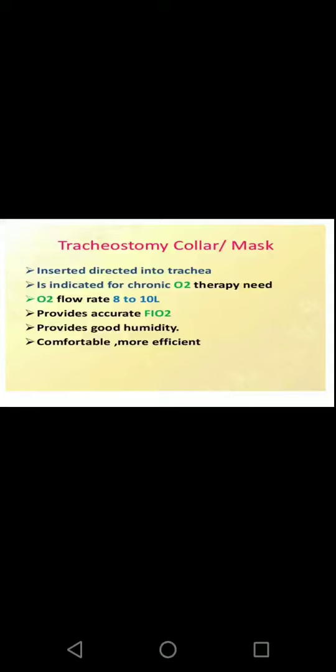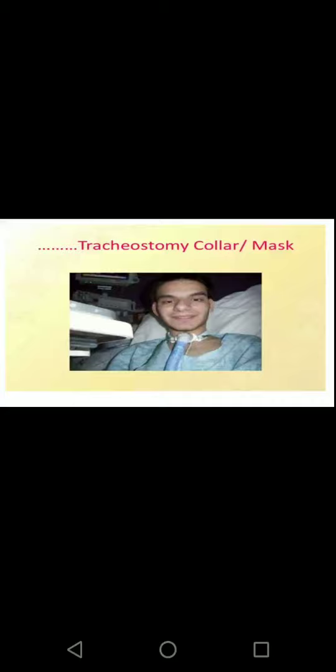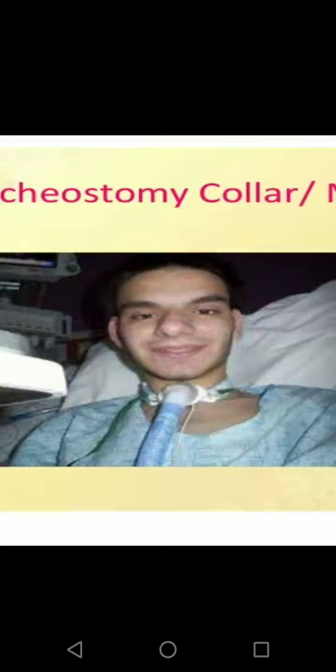The tracheostomy collar or mask is inserted directly into the trachea. It is indicated for chronic oxygen therapy needs, with a flow rate of about 8 to 10 liters. It provides accurate FiO2, good humidity, and is comfortable and more efficient for the patient.